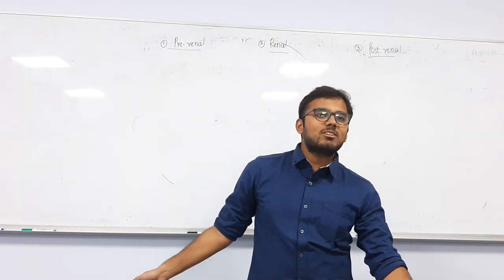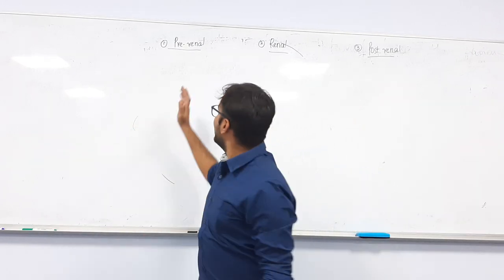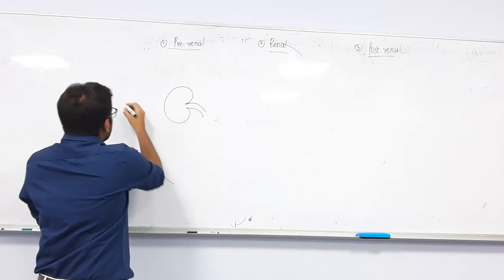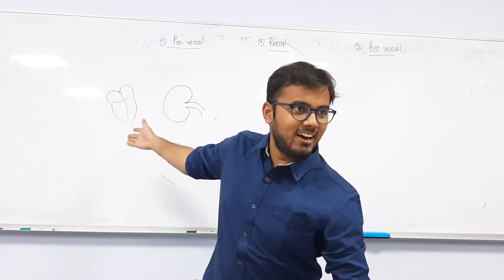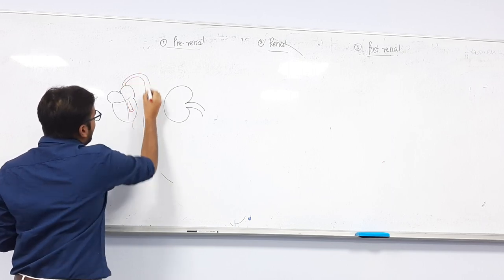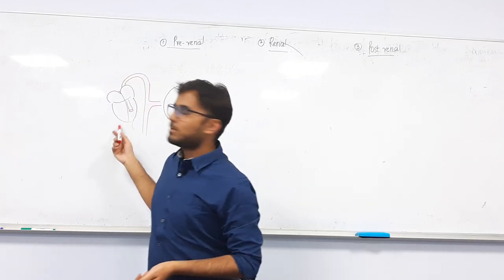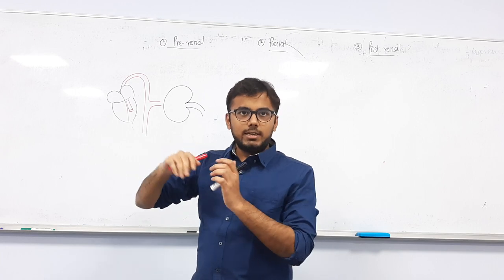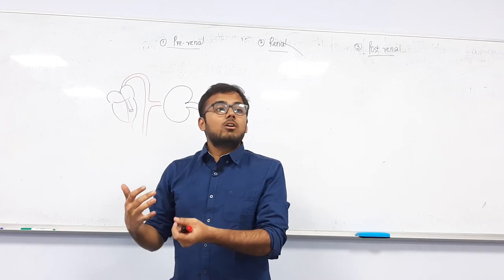We are discussing renal failure. There are three types: pre-renal, renal, and post-renal. In pre-renal, the kidney is not directly damaged, but without touching the kidney you are damaging it. Pre-renal means low blood supply to the kidney. When there is low blood supply to the kidney, the kidney will not work.